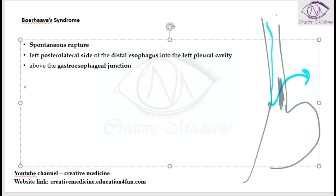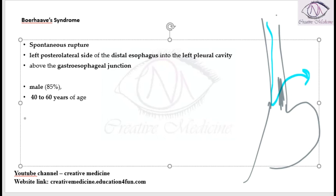Boerhaave syndrome is seen mainly in males of the age group between 40 to 60 years. It is associated with recent emesis, or vomiting, seen in the patients.